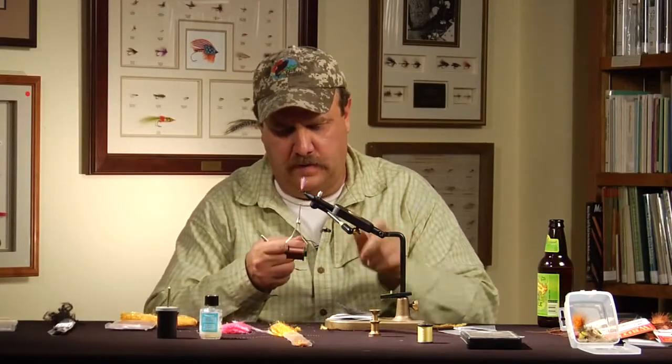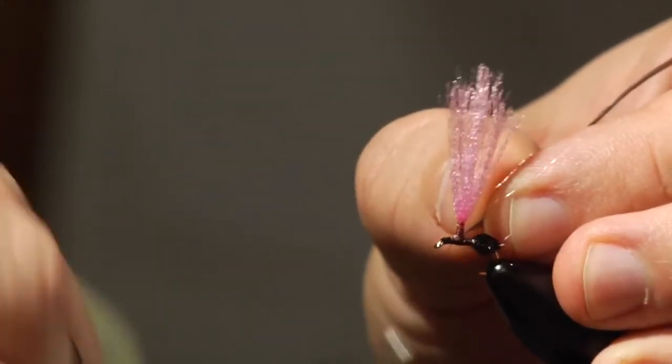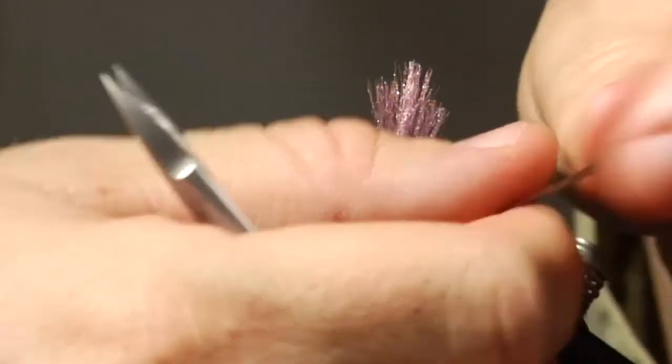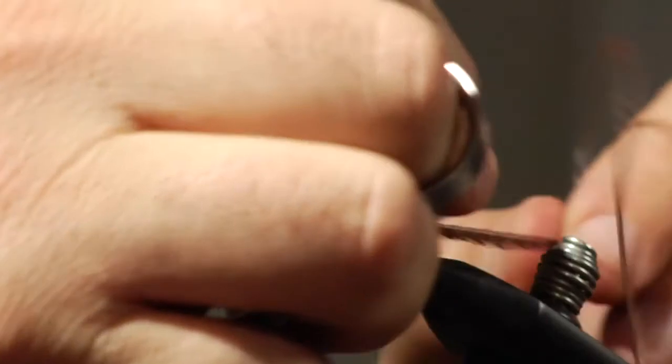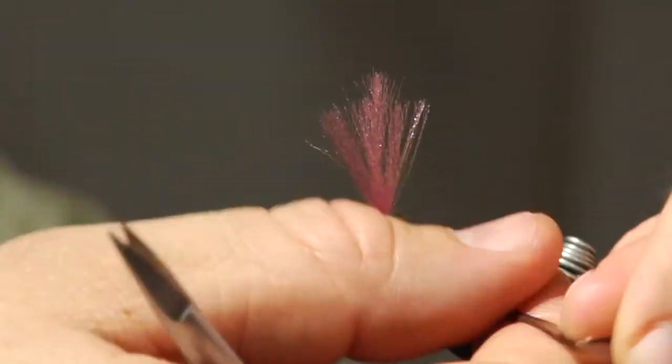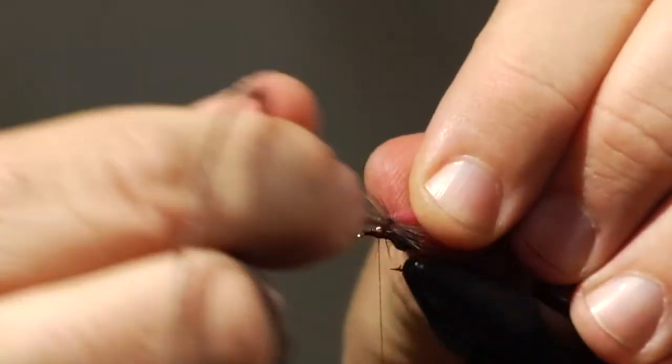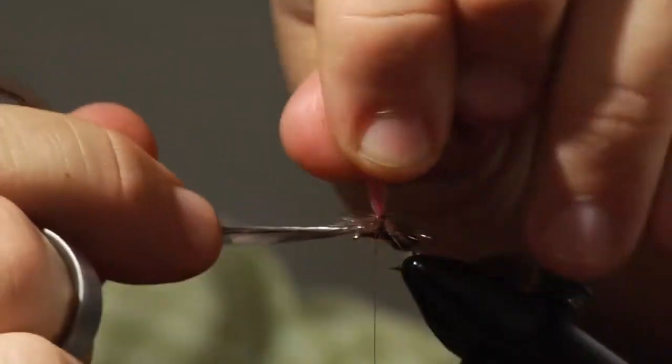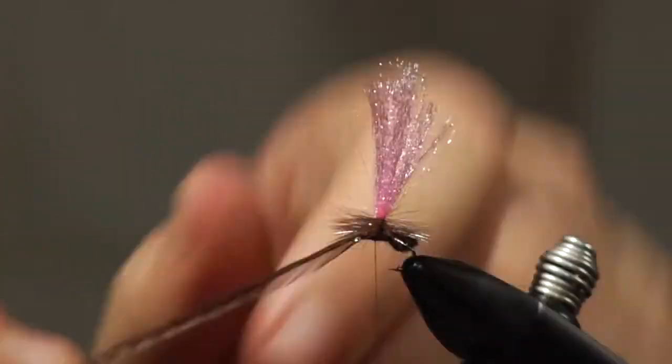I'm going to tie in a dark dun dyed grizzly hackle. Tie that in. And I'm going to start wrapping my parachute. Work my way up to the top, and I'll work my way back down. Trying to get each wrap underneath the last wrap. And with these yarn shoots, you can tweak it and twitch it any way you want. Just make sure that you get that last wrap of hackle underneath the one before it.